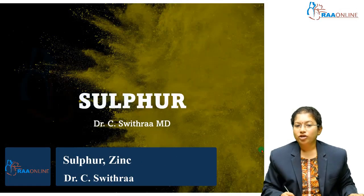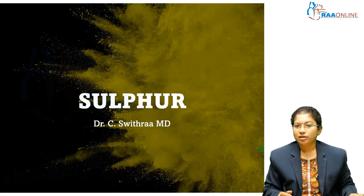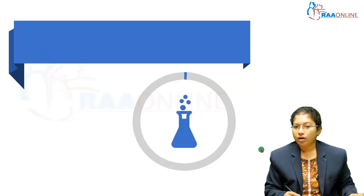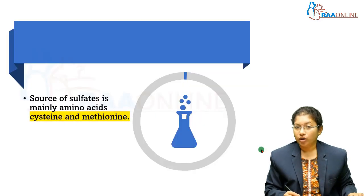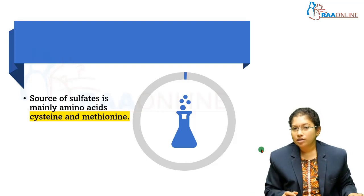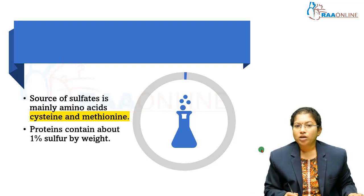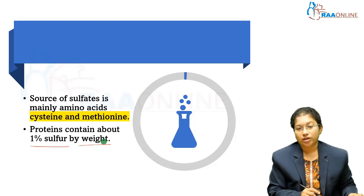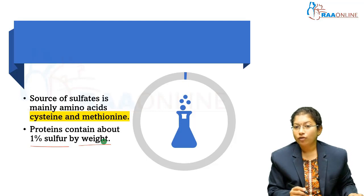Hello everyone. In this session, we will see about the rest of the minerals like sulphur, zinc, and fluoride. When you hear about sulphur, the important amino acids which contain sulphur are cysteine and methionine. The major source of sulphates in our body is the sulphur-containing amino acids cysteine and methionine. Proteins contain about 1% sulphur by weight, so proteins are the sources of sulphur.